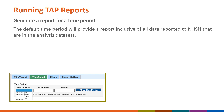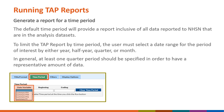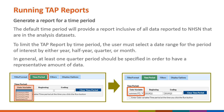The default time period provides a report inclusive of all data reported to NHSN in the analysis data sets. To limit the TAP Report by time period, the user must select a date range by either year, half year, quarter, or month. In general, at least one quarter period should be specified to have a representative amount of data. For example, to see data for quarters 1 through 3 of 2019, select the SummaryYQ variable and enter 2019Q1 as the beginning date and 2019Q3 as the ending date.